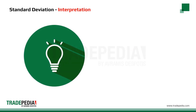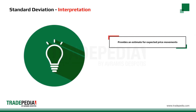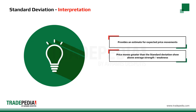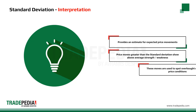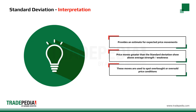Standard deviation provides an estimate for expected price movements and hence the risk of a security. Price moves greater than the standard deviation show above average strength or weakness. These moves are used to spot overbought or oversold price conditions.